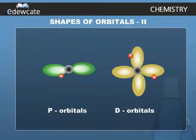In our next video, shapes of atomic orbitals part 2, we will learn in detail about the boundary surface diagrams of p and d orbitals.